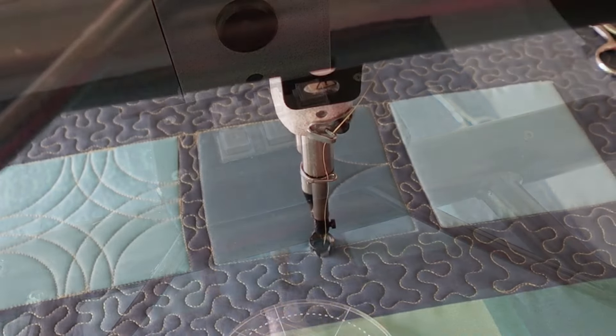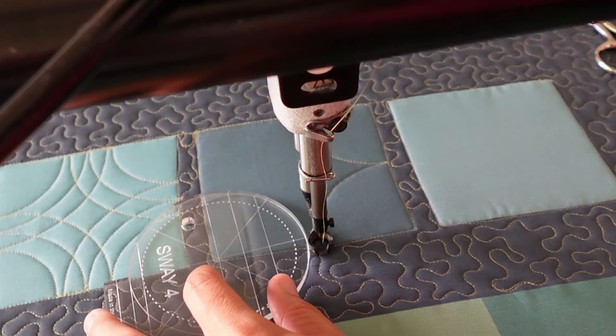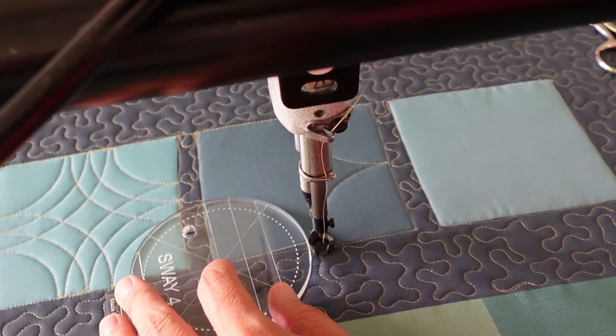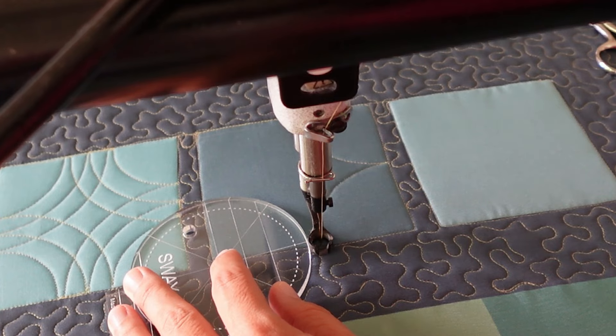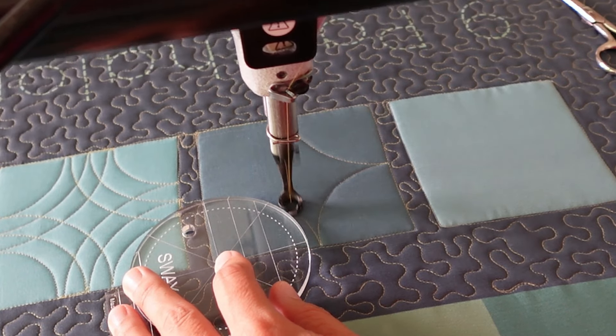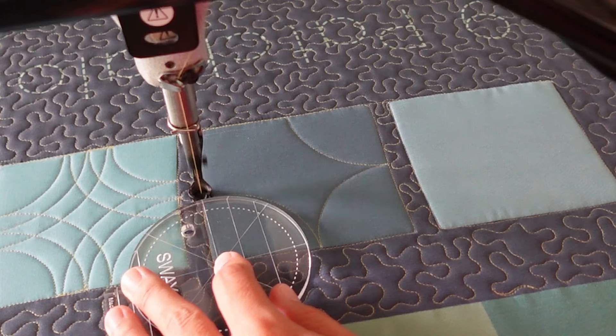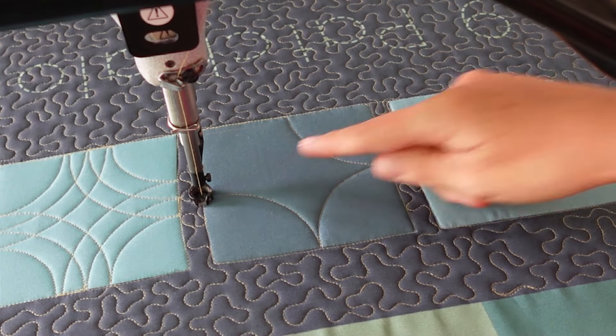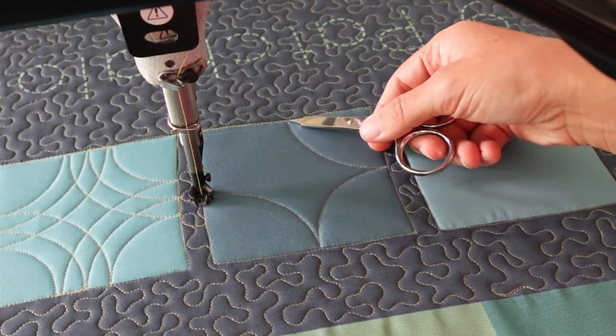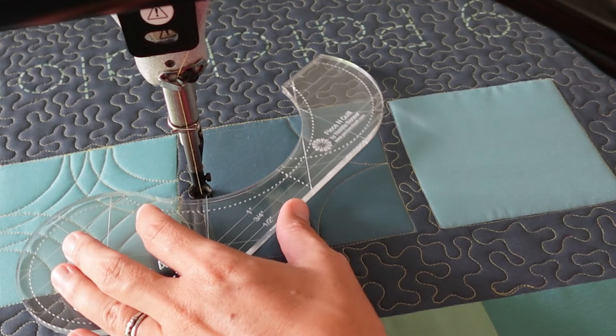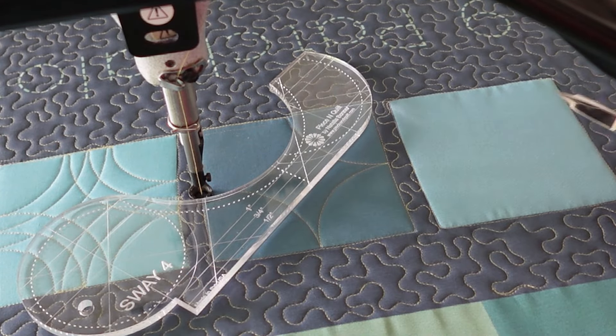Once I've stitched to that bottom point, again I'll stop with my needle in the down position. I'm going to readjust my machine quilting ruler and stitch again to the opposite side of the block. Once I reach the opposite side, I know that I'm going to be stitching one more curve up here to the top so I'm actually going to switch and use the concave side of the Sway 4 machine quilting ruler.